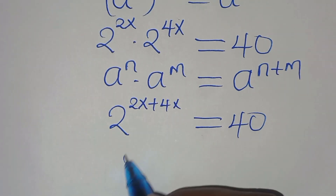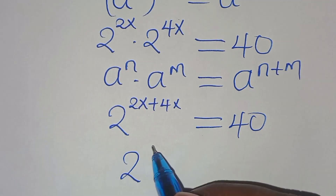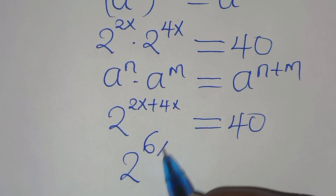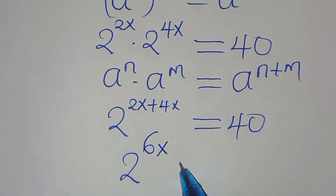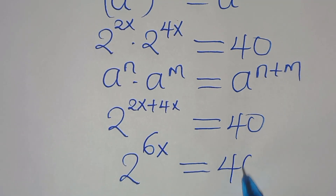So 2x plus 4x equals 6x, and this gives us 2 to the power of 6x equal to 40.